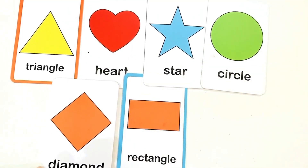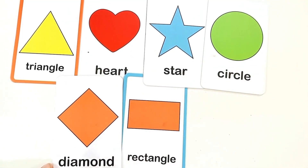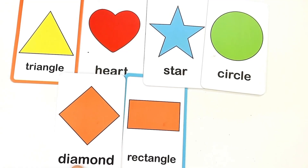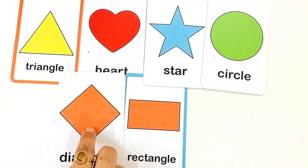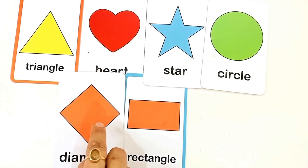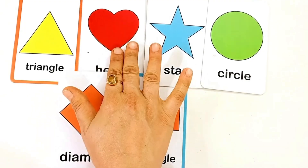D for diamond. D-I-M-O-N-D diamond. This is diamond shape. And the color is orange color.